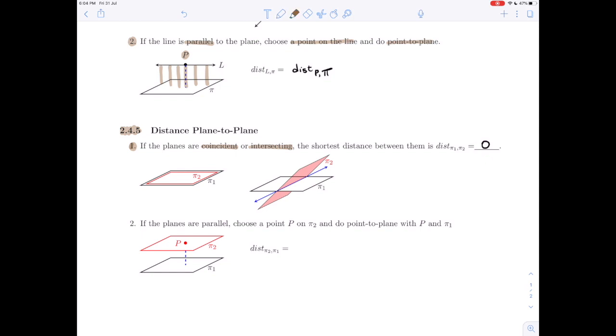If the planes are parallel, this is the second situation here. If the planes are parallel, well, again, just like our second case above, then there is a fixed distance anywhere you choose to go between them.